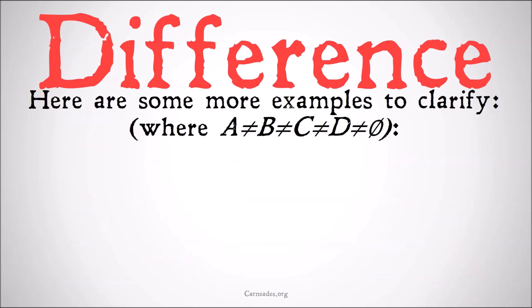Here are some more examples to clarify, once again where these four classes don't equal each other or the null set. The class of {A} minus the class of {B} is simply the class of {A} because we didn't have any Bs we could take out, so we left it alone.